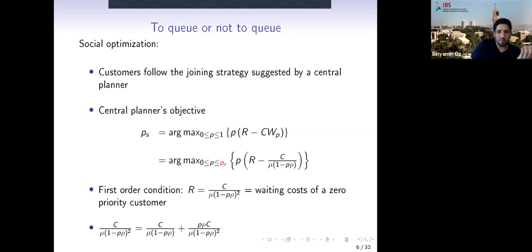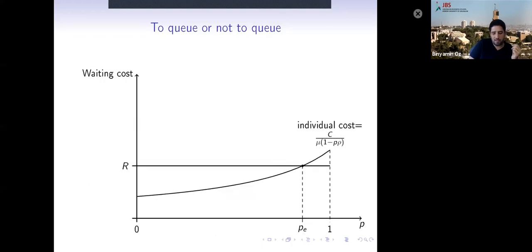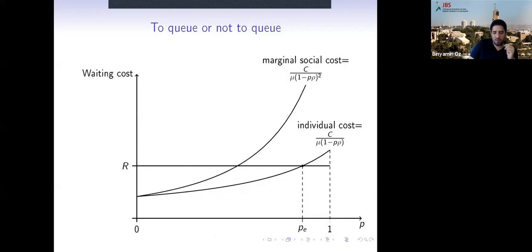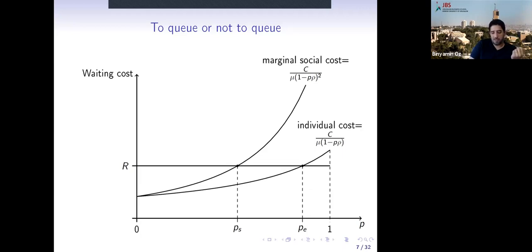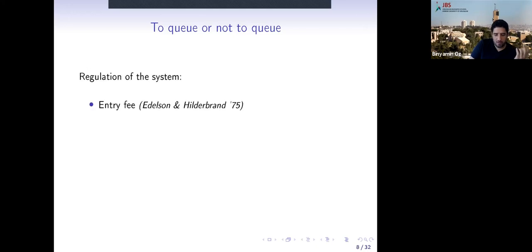Adding the marginal social cost curve to the graph, we see a positive gap between the individual and marginal social cost curves. The socially optimal joining probability p_s is determined where r meets the marginal social cost. Customers who join under p_s have strictly positive net utility — the difference between r and the individual cost. The total social welfare is positive and greater than zero.